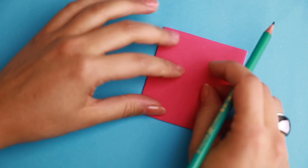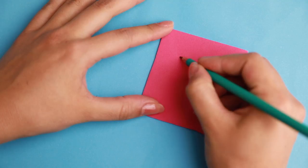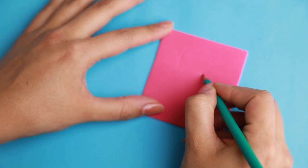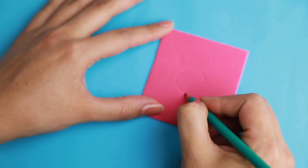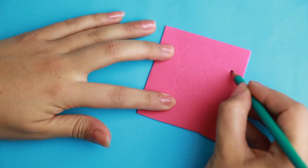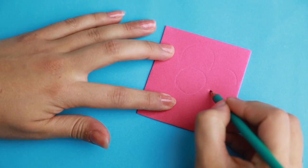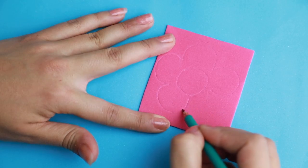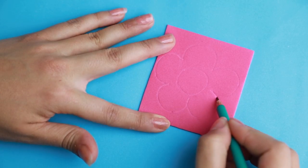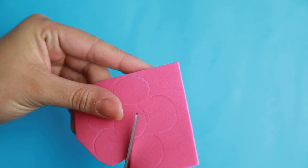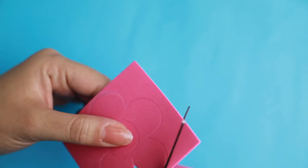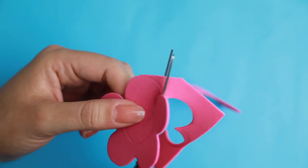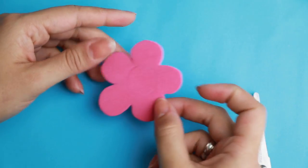If there's one thing all mothers are proud of, it's their children, right? Mom is very proud of me, I hope. So I'll make a brooch for her to wear on her chest and always remember me. I'm going to take an EVA foam, I took a pink square and made a little flower. First I made a little ball in the center to get an idea of how the flower will look.